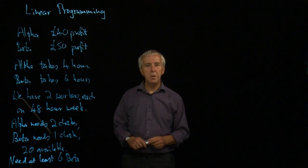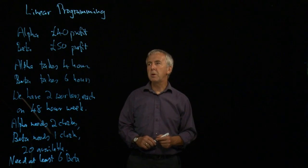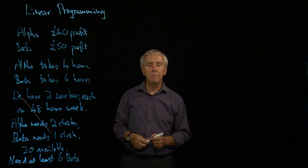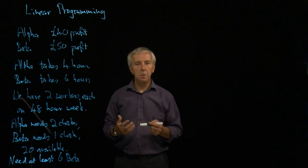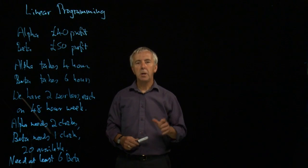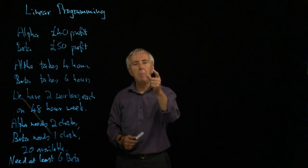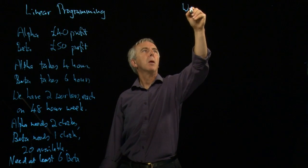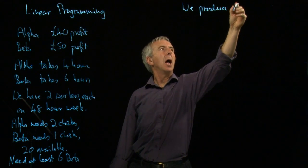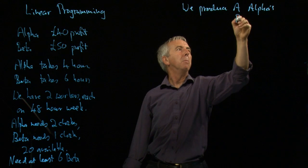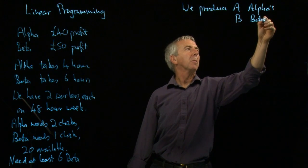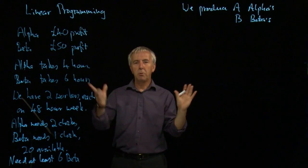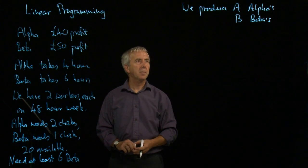So we set this up in the following way. And this is often called formulating the problem. The thing we're trying to maximize is the total profit. Every alpha microwave makes 40 pounds. What we have to do, what's crucial in this topic, is to introduce some variables, some letters, for the number of each that we make. Let's be very simplistic and say, let's make a alphas. So we produce a alphas and b betas. They are a variable. Sometimes you might want to use x and y, because we're going to be using graphs with the traditional x and y axis, but a and b obviously fits here.